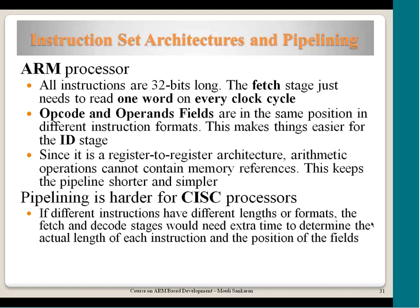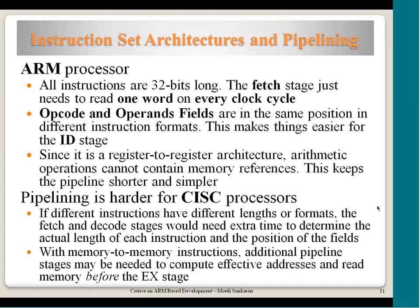The ARM ISA supports pipelining effectively because all instructions are 32-bit long, making fetching and decoding easier since operand fields are at fixed locations. Arithmetic operations use a register-to-register architecture, so ALU operations including barrel shifter can complete in one cycle with no memory delay. In contrast, processors that allow data processing instructions to use memory operands directly have more complex decoding logic, making pipeline stages slower and harder to implement efficiently.